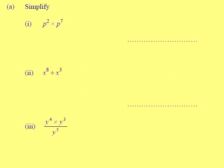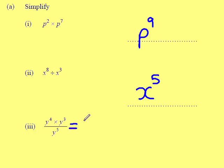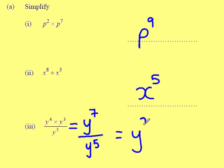Next question, number 10. Simplify. These are all straightforward: add the powers when multiplying — P to the power of 9. Take them away when dividing — X to the power of 5, because 8 take away 3 is 5. Simplify the numerator then denominator: the numerator becomes Y to the power of 7, because I add them when multiplying, all divided by Y to the power of 5. Take away — that's Y squared.